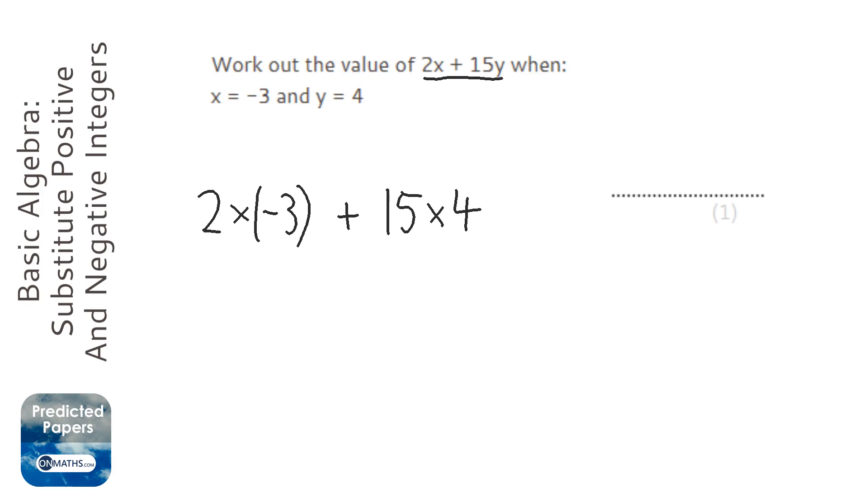Okay, so 2 times negative 3, a positive times a negative will give us a negative, and 2 times 3 is 6. We're going to add 15 times 4.